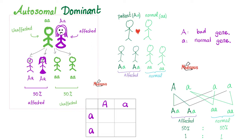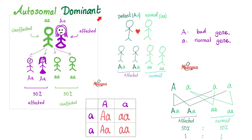Marfan syndrome is inherited in an autosomal dominant fashion, which means one parent is affected and the other is unaffected. Using a Punnett square with big A (affected) and small a (normal): big A, small a — affected; small a, small a — normal. Half the offspring are unaffected, half have Marfan syndrome. In autosomal dominant diseases, the uppercase A is the bad gene; in autosomal recessive, the lowercase a is the bad one.